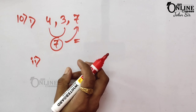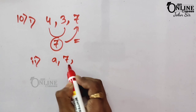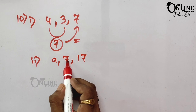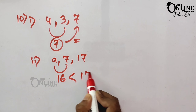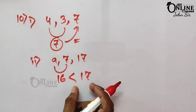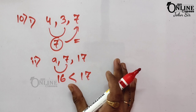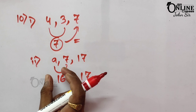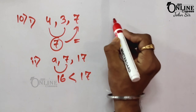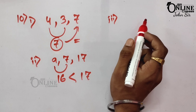Number 2: Is it possible to construct a triangle with sides 9, 7, and 17? Here 9 + 7 = 16, and 16 < 17. Since the sum of two sides is not greater than the third side, it is not possible to construct this triangle.